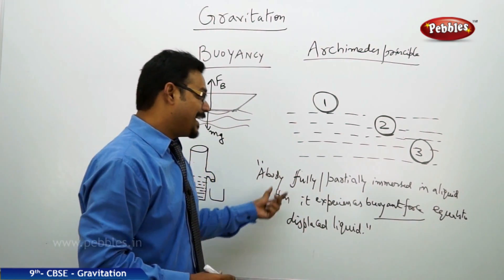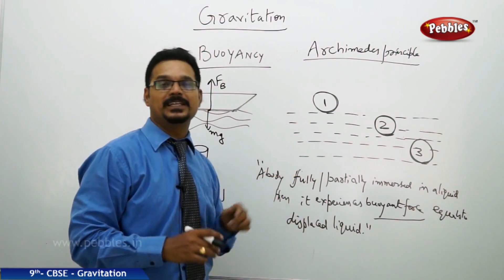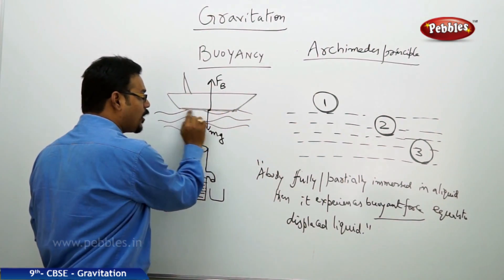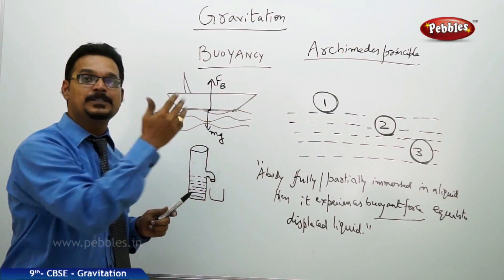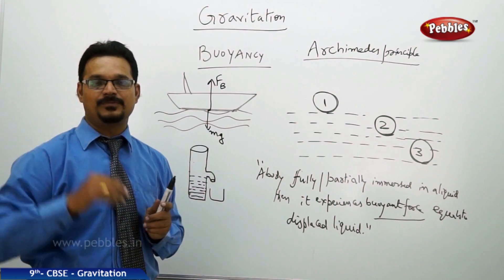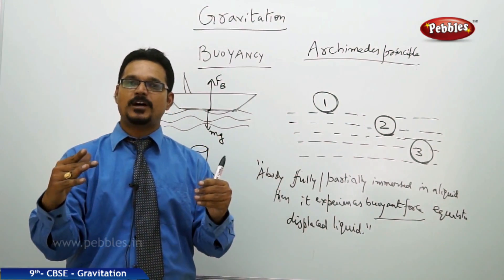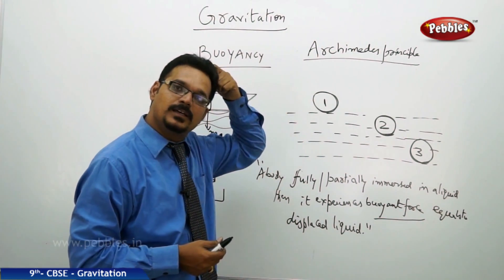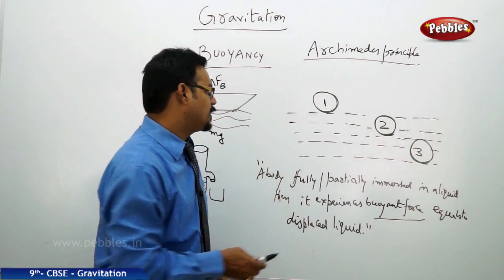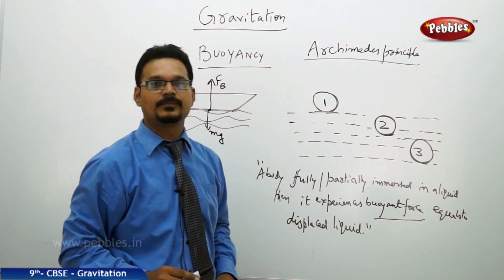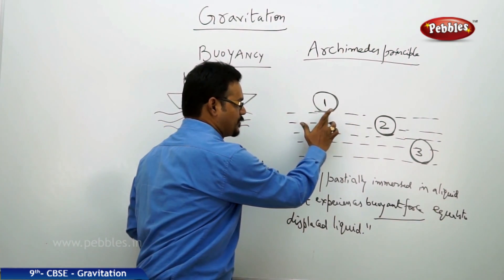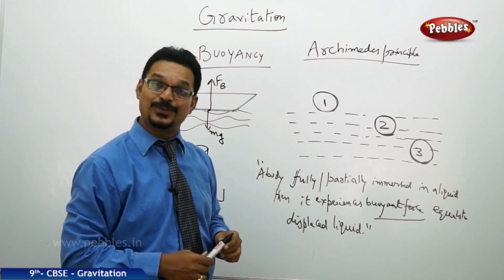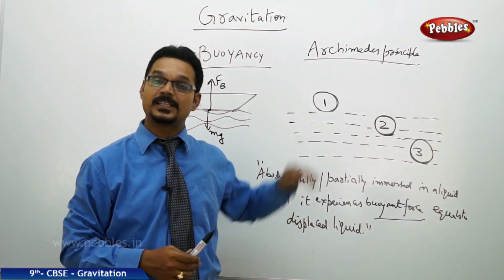That means when the ship is on the water, however much area it occupies, that much amount of water is displaced — removed — so that it gets some empty space occupied by the ship. For example, before a ball is placed on the water, water is there, but as soon as the ball is placed, the water is removed from that position and occupied by the ball. The removed water is what is called displaced, and so the ball is not sinking — it is floating on the surface of the water.